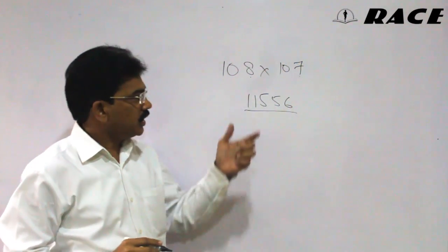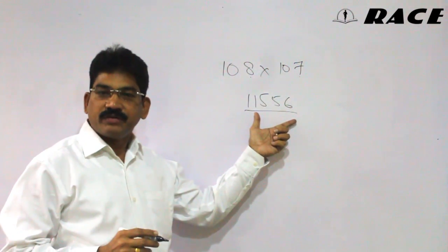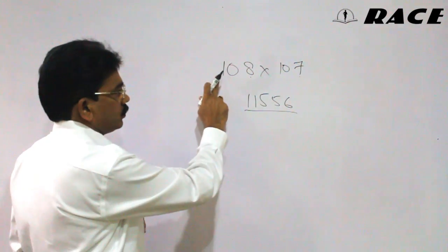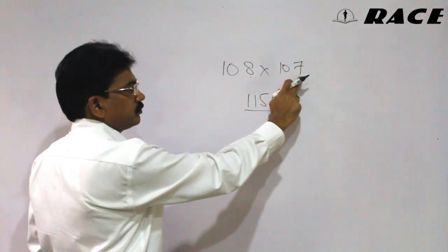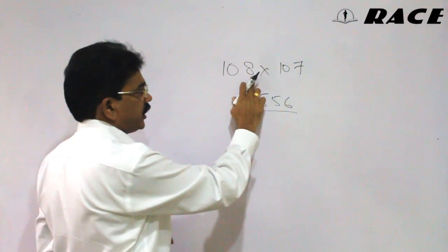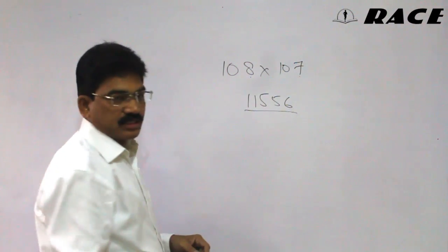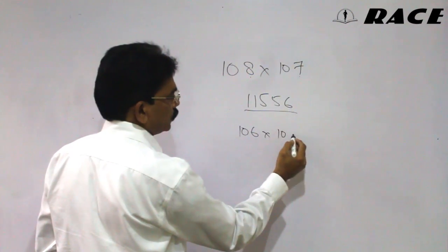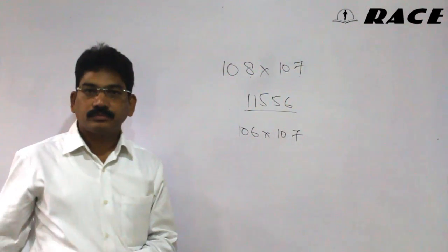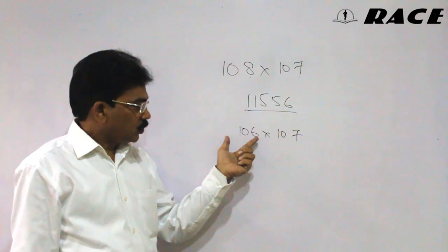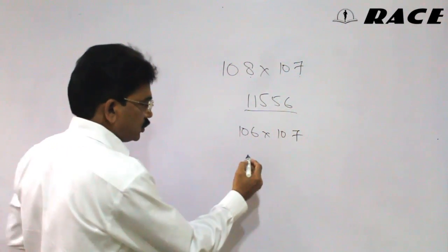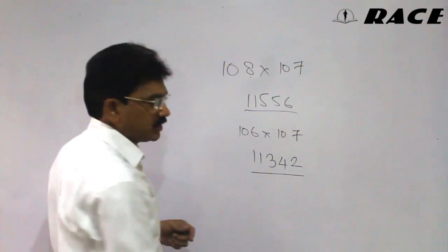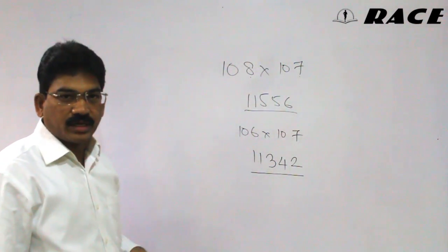The second part is 8 into 7, which is 56. So 108 into 107 is 11556. To repeat: 108 plus 7 is 115, 8 into 7 is 56. We take another example: 106 into 107. We can immediately say 106 plus 7 is 113, and 6 into 7 is 42. So the answer is 11342.